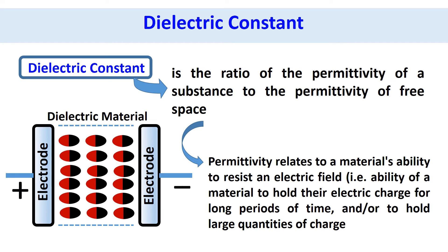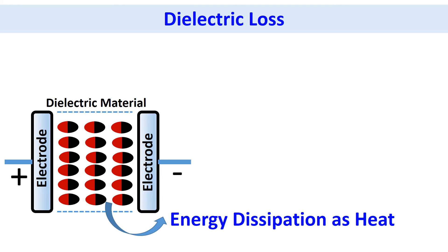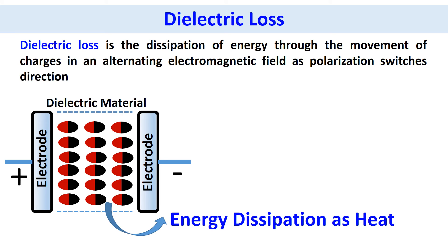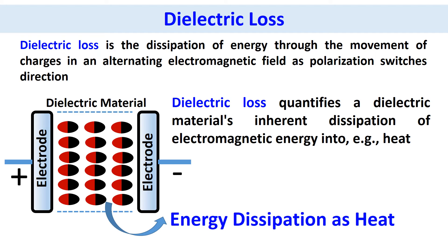Dielectric constant is the ratio of the permittivity of a substance to the permittivity of free space. Permittivity relates to a material's ability to resist an electric field — that is, the ability of a material to hold its electric charge for a long period of time and/or to hold large quantities of charge. Dielectric loss is the dissipation of energy through the movement of charges in an alternating electromagnetic field as polarization switches directions. Dielectric loss quantifies a dielectric material's inherent dissipation of electromagnetic energy into another form, for example heat.